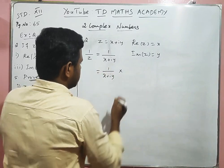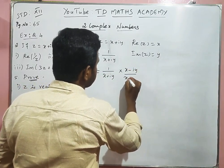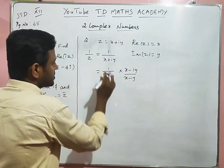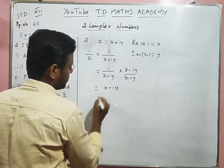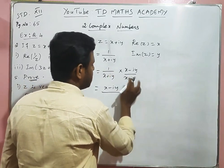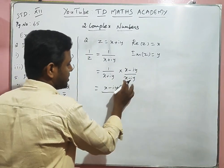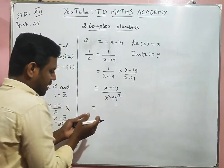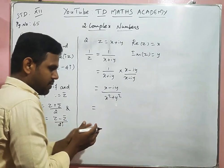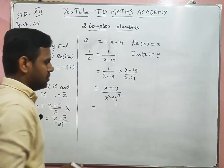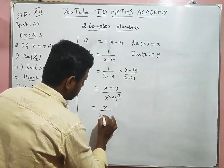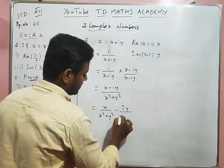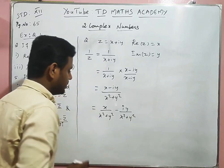Multiply numerator and denominator by the conjugate (x - iy): 1/(x + iy) × (x - iy)/(x - iy) = (x - iy)/(z · z̄). Since z · z̄ = x² + y², we get (x - iy)/(x² + y²). Separating into rectangular form: x/(x² + y²) - i·y/(x² + y²).